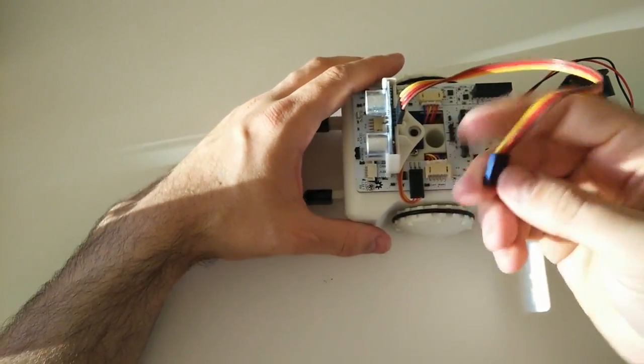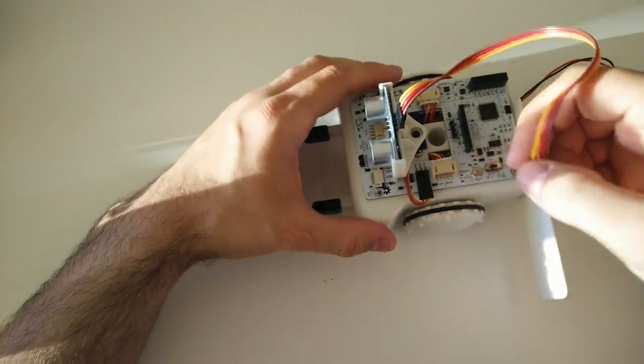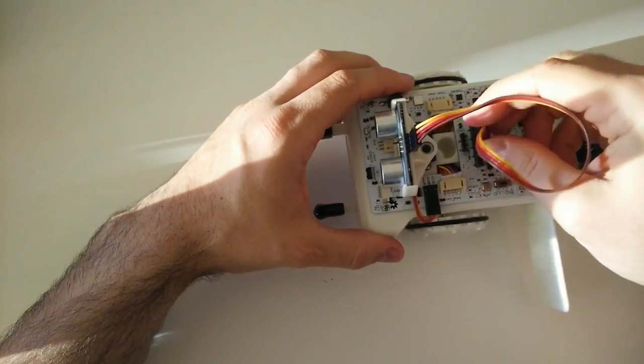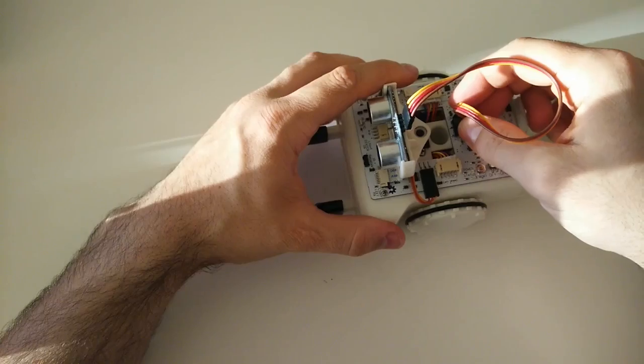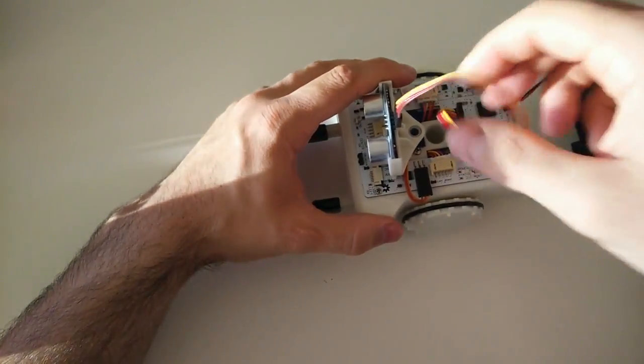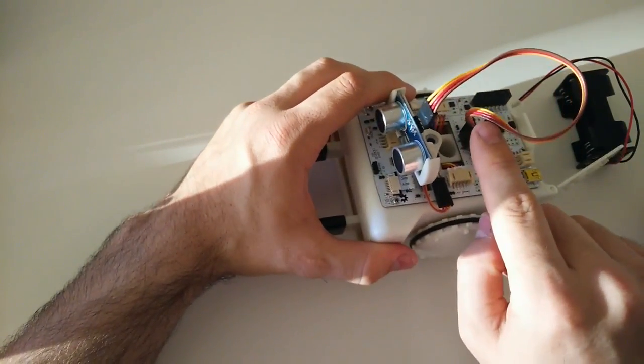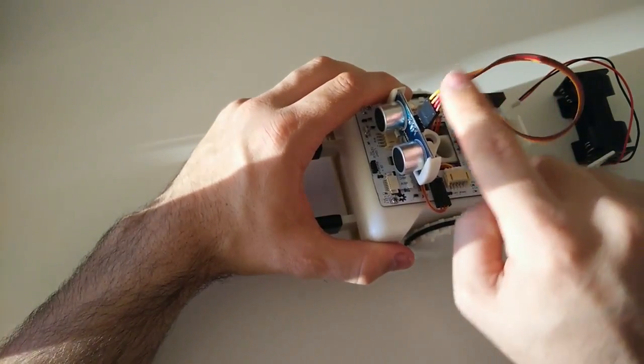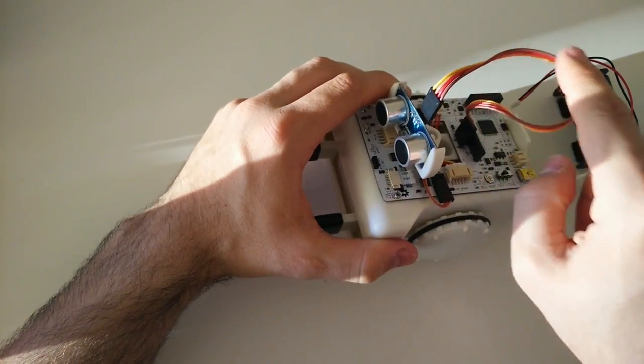Next we'll plug in Sparky's ultrasonic connector. Now it's very important to keep the same colors in the same orientation. So if the brown cable is closer to you, make sure you plug it in with the brown cable facing you. Same thing for the yellow cable. Make sure at the end of it that the cables aren't twisting and all the colors are the same at the end.